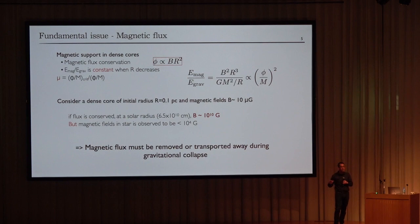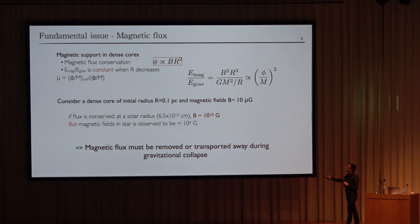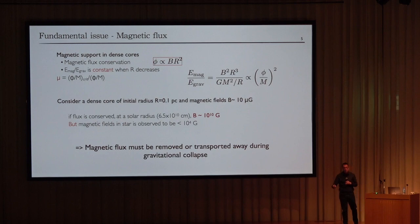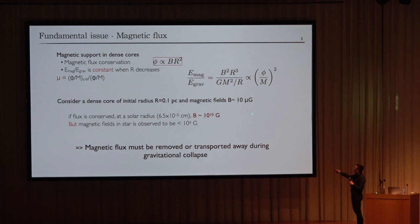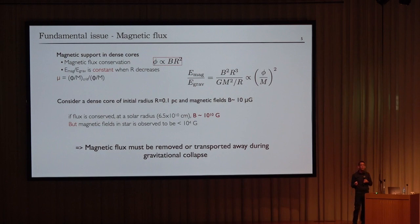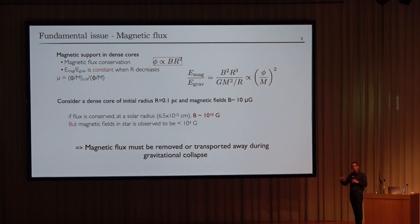Another problem is about magnetic field. If one assumes that magnetic field and gas are perfectly coupled, the ratio between magnetic and gravitational energy is constant — it only depends on the initial mass-to-flux ratio. If magnetic field is important at the beginning at core scale, it will remain important during protostellar collapse. Taking typical magnetic field amplitudes in the ISM and assuming magnetic flux conservation, we end up with a field of 10^10 Gauss, which is not what is observed. In stars, magnetic fields are on the order of a kilogauss, so we must also transport magnetic flux away during gravitational collapse.